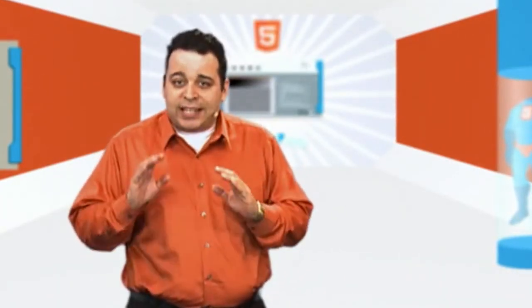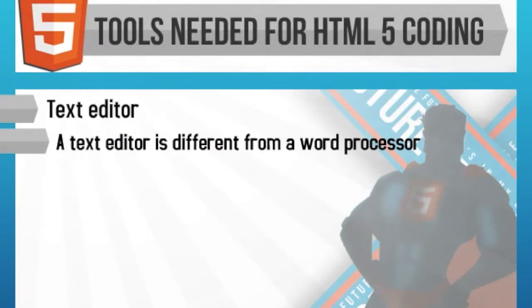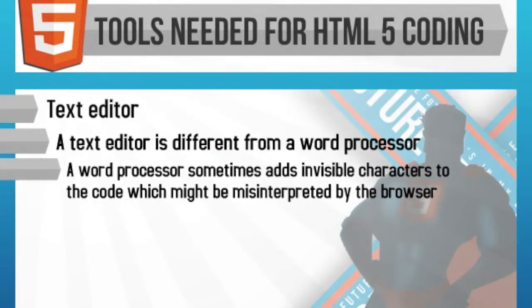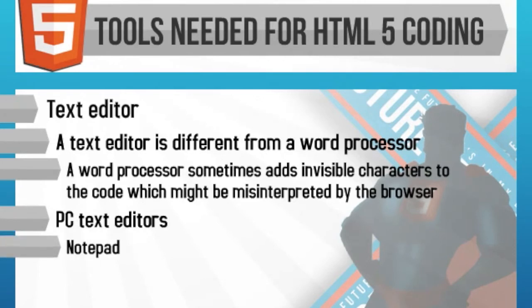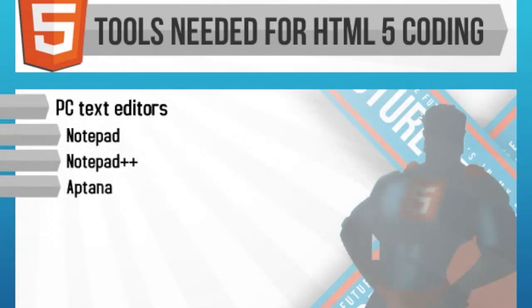When creating web pages with HTML, one of the things you'll spend a lot of time doing is managing the text and image content of the page. We're going to talk about the classical HTML tags that have been part of the language since its inception, and then the new tags that are part of the HTML5 spec. You don't want to use a word processor because it sometimes embeds invisible characters that might get misinterpreted by the browser. You want to use a pure text editor — on the PC, examples are Notepad, Notepad++, and Aptana, which is a robust development environment, both free and downloadable.